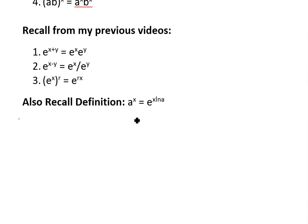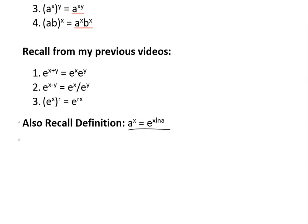So also recall this definition, I'll use this in the proof. Watch my earlier video on general exponential functions on this one. a^x equals e^(x ln a) right here. So let's get to the proof.